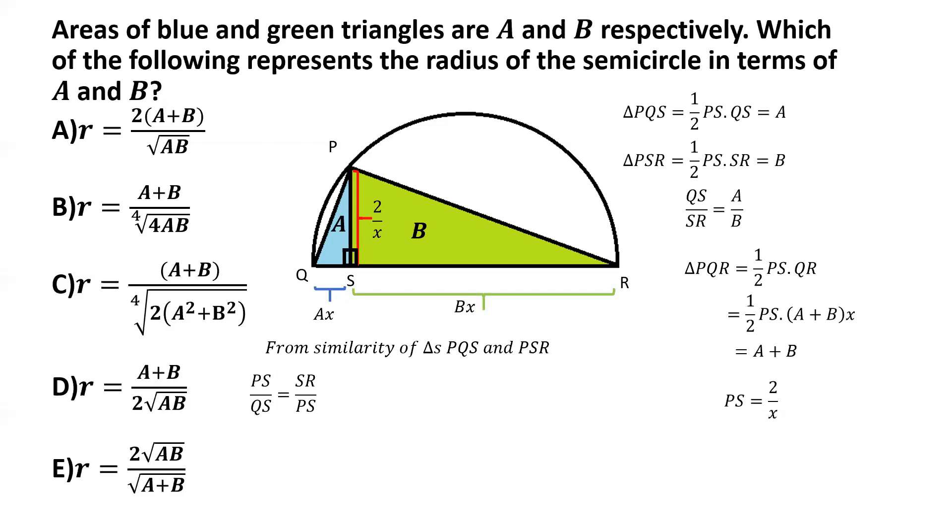And now it's a matter of substitution because we know PS is 2 by X. What is QS? QS is AX. What is SR? SR is BX. And PS, as we have already substituted, we can substitute 2 by X for that.